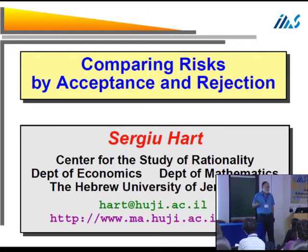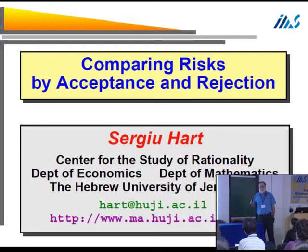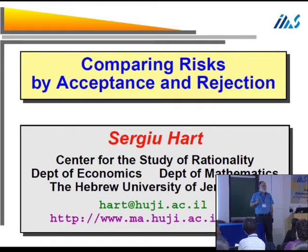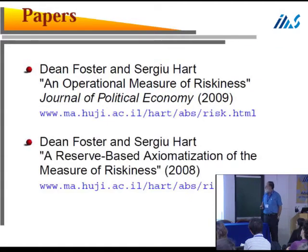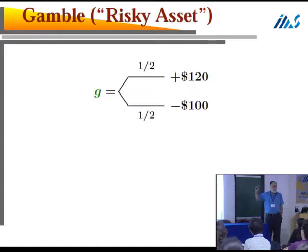This talk is at a conference on algorithmic game theory, but this talk has no game theory. It's a one-person game, which is not a game for game theorists — it's decision theory. You'll say it's computer science, but this talk has even less computer science. So why am I here? Norm and Michal told me to talk about something new that nobody knows about. It's all on my web page — relevant papers, presentations, everything.